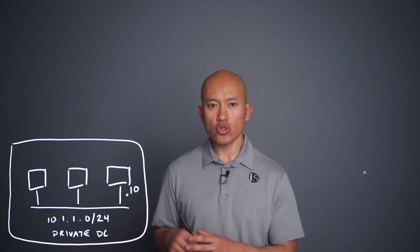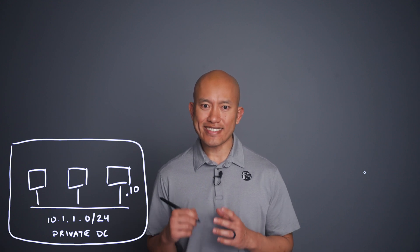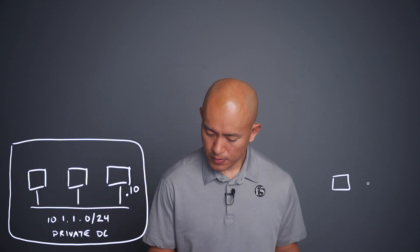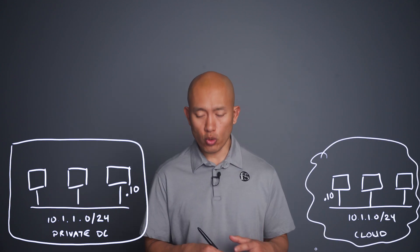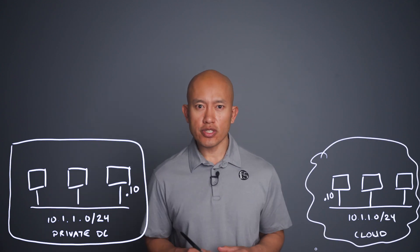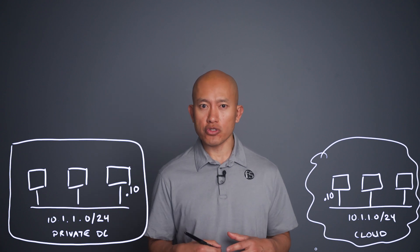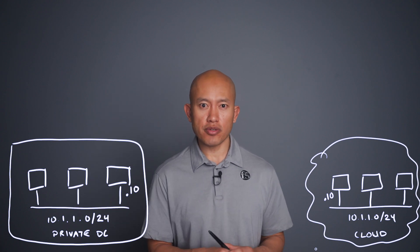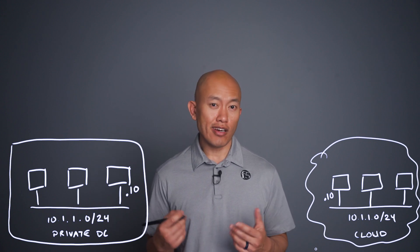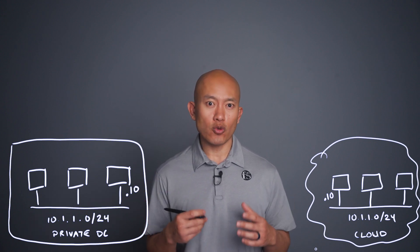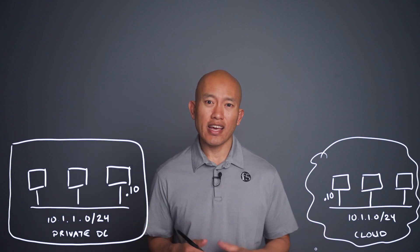Now let's say that a server has an IP address of 10.1.1.10. From here, let's say a cloud environment has been inherited through an acquisition, or edge services have been built out there already, or a business development group has been doing some work inside of it — whatever the case may be — and the team that built it used a subnet of 10.1.1.0/24, which isn't too uncommon.